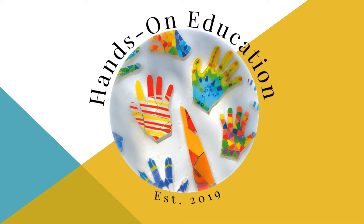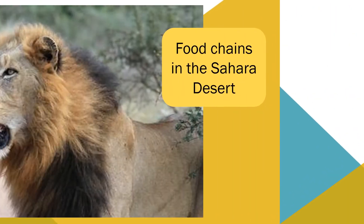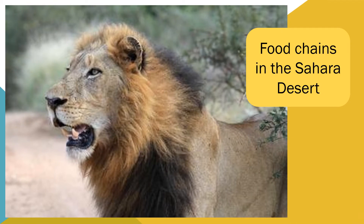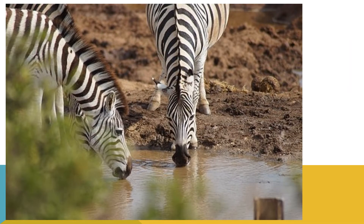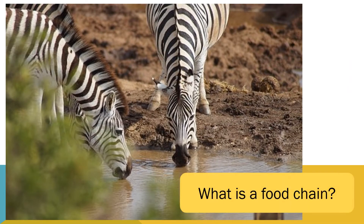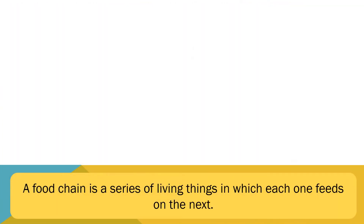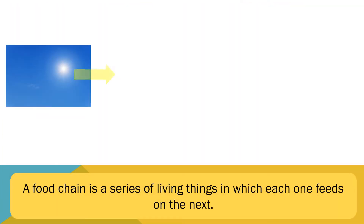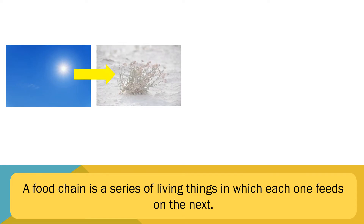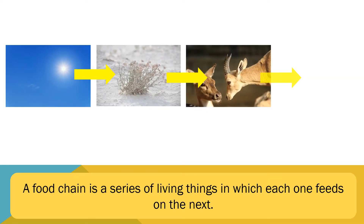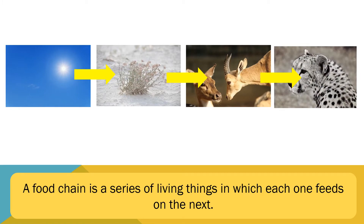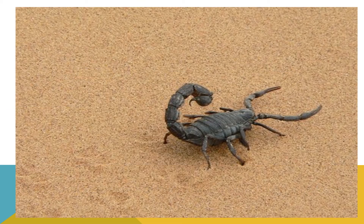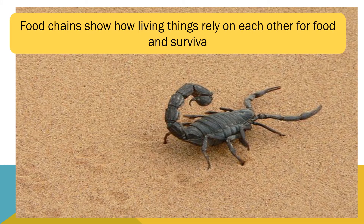Hi and welcome to Hands On Education. This video is about food chains in the Sahara Desert. Firstly we need to know what is a food chain. A food chain is a series of living things in which each one feeds off the next. Food chains show how living things rely on each other for food and survival.